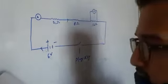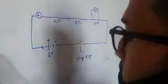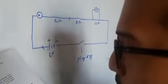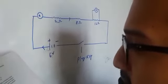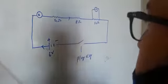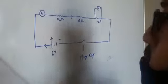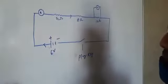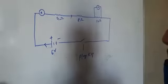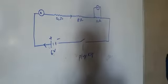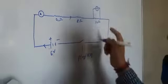So let's see the solution. What would be the readings in the ammeter? To find the readings of the ammeter, we must find the current flowing through the three resistors.